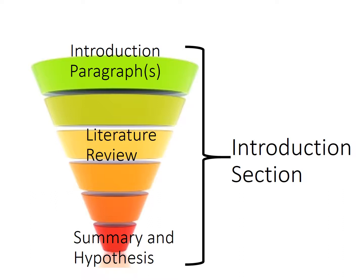The first paragraph, or sometimes paragraphs, introduces the main ideas — also known as the conceptual variables — and helps the reader understand why it's important. Then we transition into more specific information where we talk about what we know from other work, also known as the literature review. That's organized in a way that leads to the hypothesis, a specific prediction of the relationship between two variables.